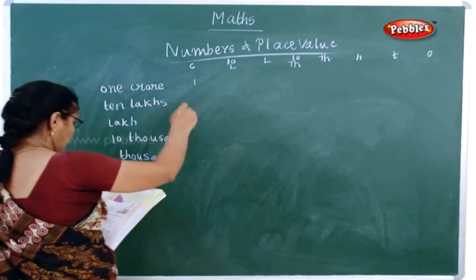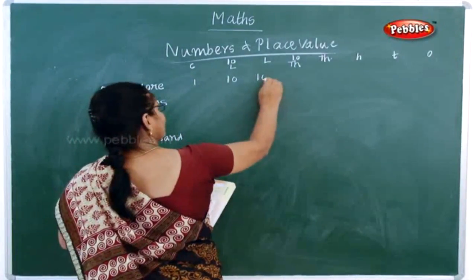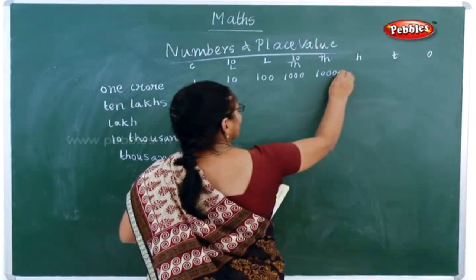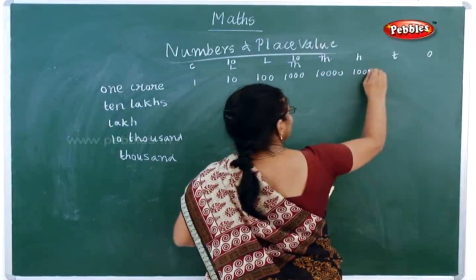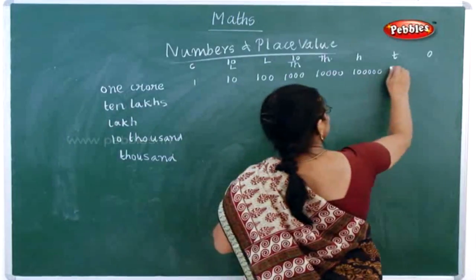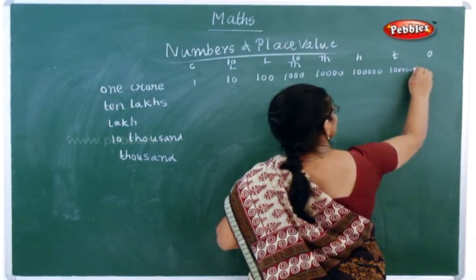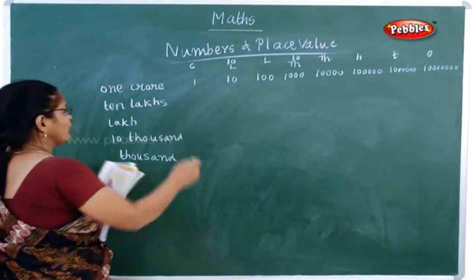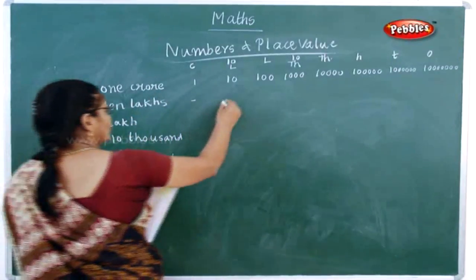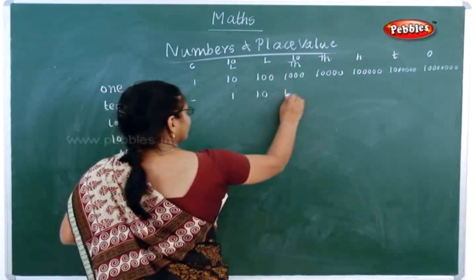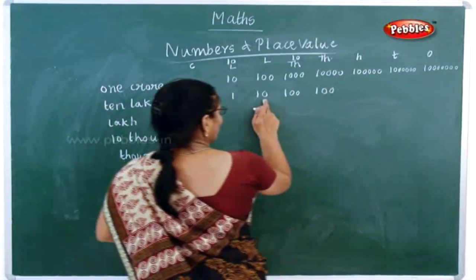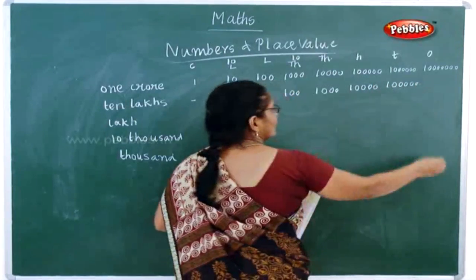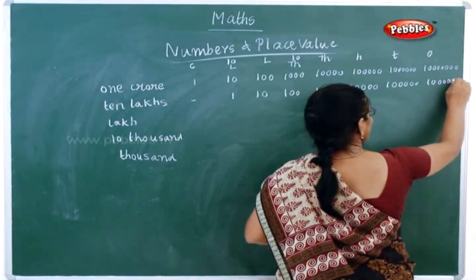Now in one crore, what will you write? One, then ten lakhs here: one, zero, two, zero, three, four, zero, four, then five, five, then six, six, then seven, seven. Same way for ten lakhs: we start one, ten, one hundred, one thousand. See: one zero, two zero, three, four zero, five zero, three five, six zero, three six. Right?